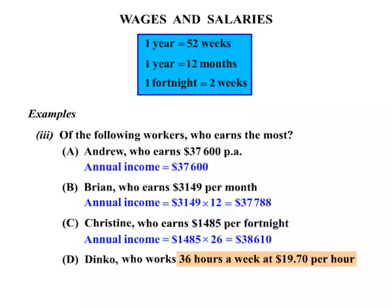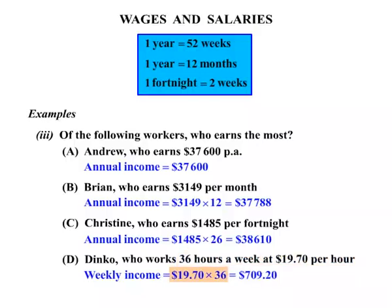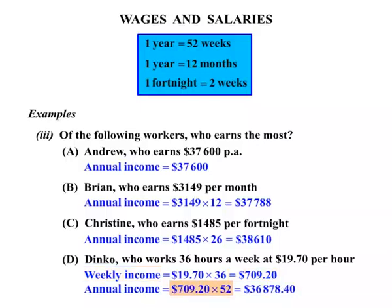Finally, Dinko. We still need to work out his weekly income before we can get to the annual income. He's working 36 hours a week and getting $19.70 per hour, so the weekly income is $19.70 times 36, which works out to be $709.20. Now the annual income: that's his weekly income multiplied by 52 weeks in the year, giving us $36,878.40.